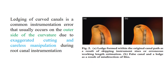Ledging of a curved canal is a common instrumentation error, and usually the ledge is present on the outer side of the curvature due to exaggerated cutting and careless manipulation. A ledge can be formed within the original canal path — for example, if you are skipping instrument sizes, going from number 10 directly to number 20 without using number 15. Alternatively, a ledge can create a false canal due to misdirection of files.